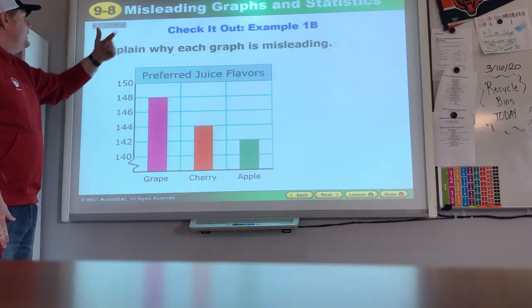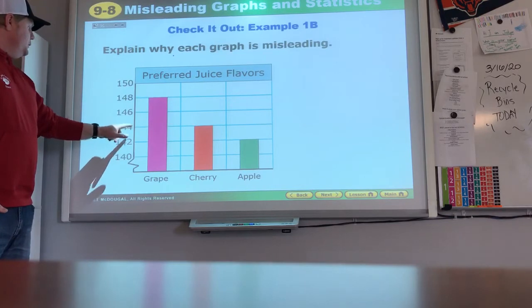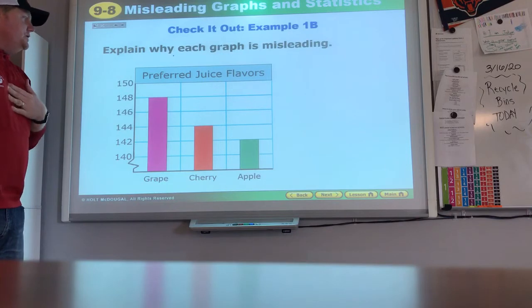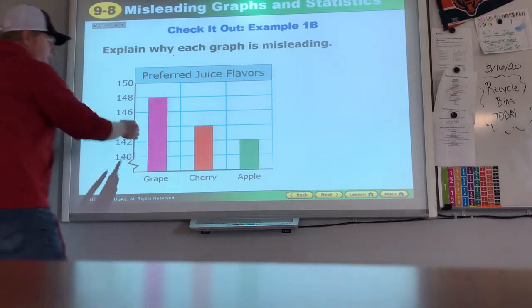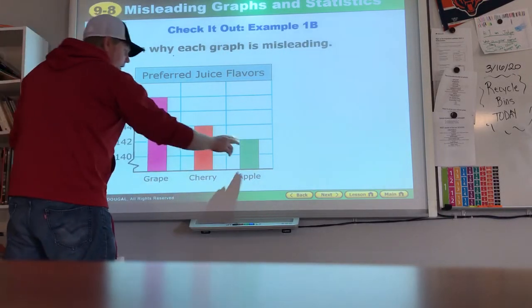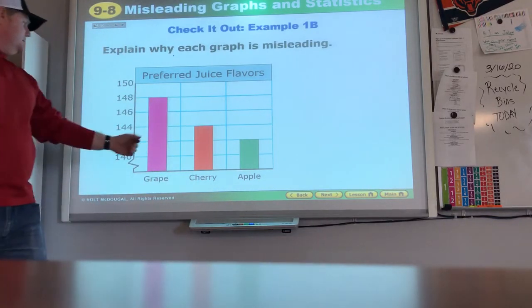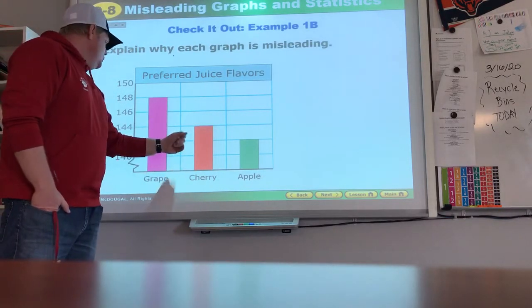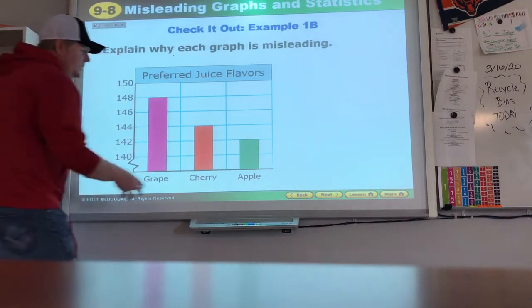All right, explain why each graph is misleading. 140, 142, 144, 148, or 46, 48, 150. They all grow by two each and every time. All right, that seems very good, that seems very right. So we look at our amounts, 148, 144, and 142. Not much difference between them. Four more grapes than there are cherries, six more grapes than there are apples, two more cherries than there are apples.